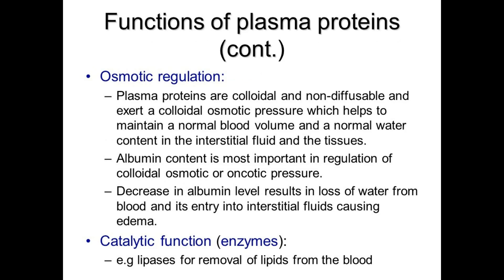Osmotic regulation: plasma proteins are colloidal and non-diffusable and exert a colloidal osmotic pressure, which helps to maintain normal blood volume and normal water content in the interstitial fluid and tissue. Albumin is most important in regulating colloidal osmotic (oncotic) pressure; decreased albumin levels result in loss of water from the blood into the interstitial fluid, causing edema.